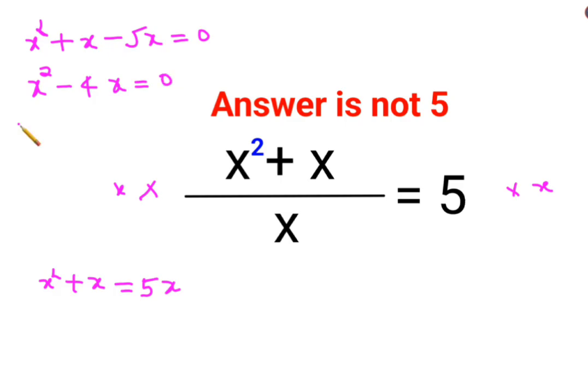So now what I can do over here is x is taken out and I will be left with x minus 4 equals to 0. Now what happens over here is from this I can say x is either equal to 0 or I can say x minus 4 equals to 0. So here we can say x equals to 4.